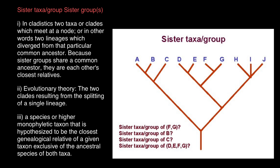First, let's check the definitions of sister taxa or sister groups. The first definition in cladistics: two taxa or clades which meet at a node — in other words, two lineages which diverge from a particular common ancestor. Because sister groups share a common ancestor, they are each other's closest relatives. The second definition in evolutionary theory: the two clades resulting from the splitting of a single lineage. The third: a species or higher monophyletic taxon hypothesized to be the closest genealogical relative of a given taxon.